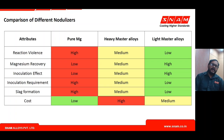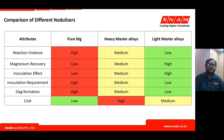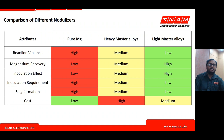This table compares the three different types of nodulizers against general foundry expectations, including reaction violence — since every ductile iron treatment involves a highly violent reaction due to the magnesium — magnesium recovery, which determines the amount of ferro silicon magnesium or magnesium alloy to be added, and process capability and efficiency.